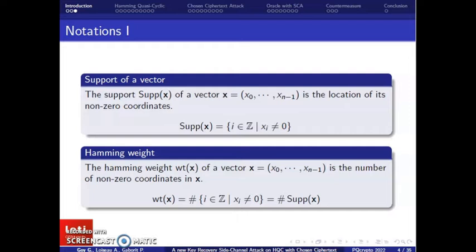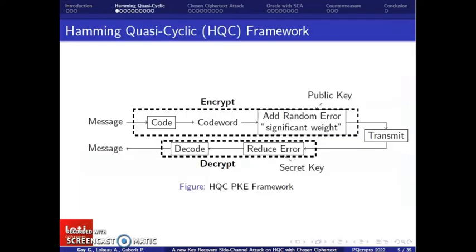The support of a vector, which is the location of the non-zero coordinates. Please note that in a binary case, knowing the support of a vector is equivalent to knowing the vector. Then, I define the hamming weight of a vector as the number of its non-zero coordinates, or the cardinality of the support.